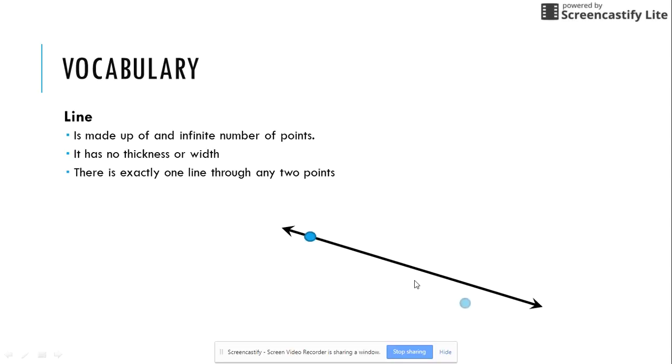There is exactly one line through any two points. So any two points that I have can be connected to form a line.